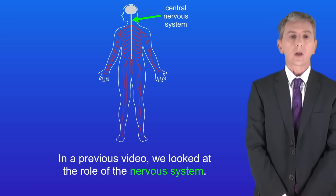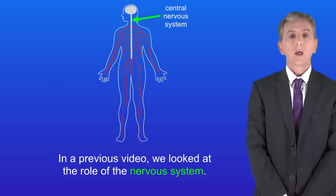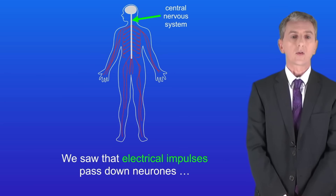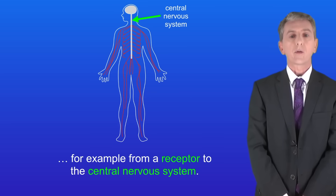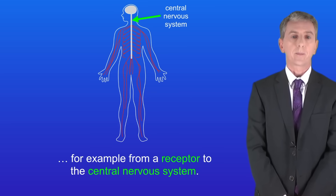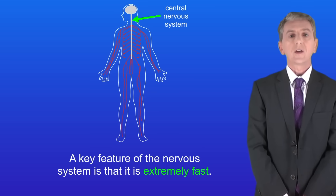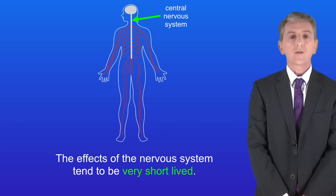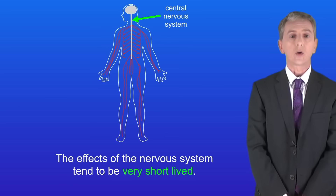In a previous video we looked at the role of the nervous system. We saw that electrical impulses pass down neurons, for example from a receptor to the central nervous system. A key feature of the nervous system is that it's extremely fast. However the effects of the nervous system tend to be very short-lived.